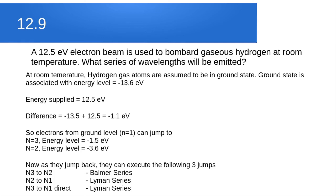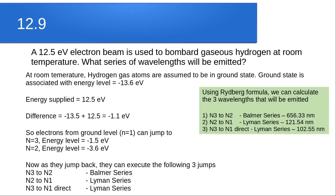Using the Rydberg formula: for N3→N2 (Balmer), with n₁ = 2 and n₂ = 3, we get 656.33 nm. For the Lyman series with n₁ = 1 and n₂ = 2, we get 121.54 nm; and with n₁ = 1 and n₂ = 3, we get 102.55 nm.